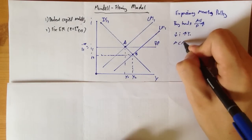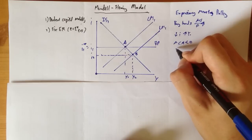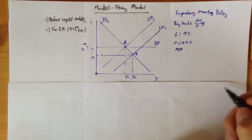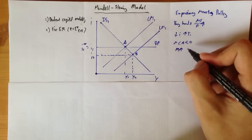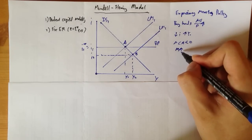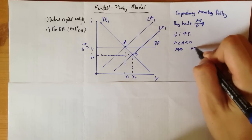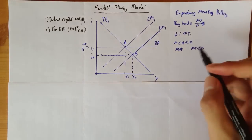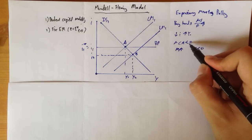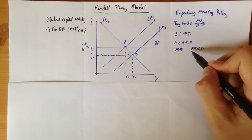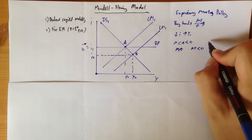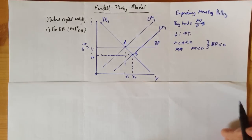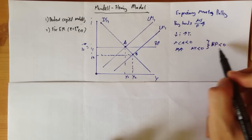So our change in capital account is going to be less than zero. The increase in output is going to cause an increase in imports, because the increase in income is going to make people spend more, so they will have an increase in imports, which means our net exports are going to be less than zero. Under the Mundell-Fleming model with perfect capital mobility, the change in capital account is more significant than the change in our current account. Together, both of these are going to cause our BP to be less than zero, because both contribute to a negative BP.